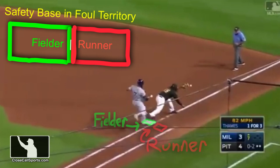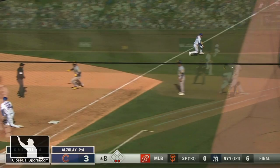For instance, with a safety base, no collision would have occurred on this play because the runner would have been running in foul territory and the fielder would have remained in fair territory.